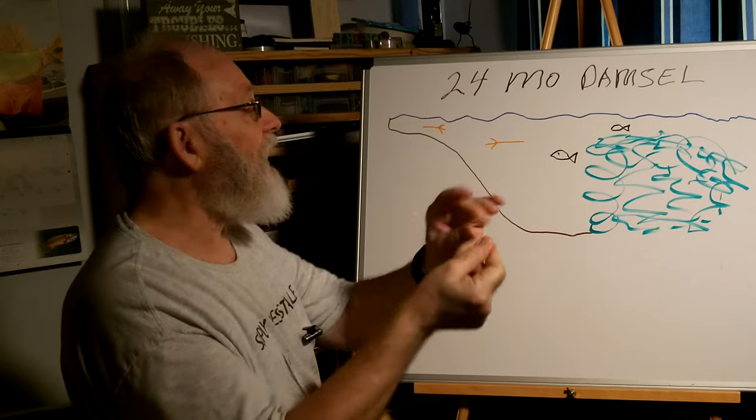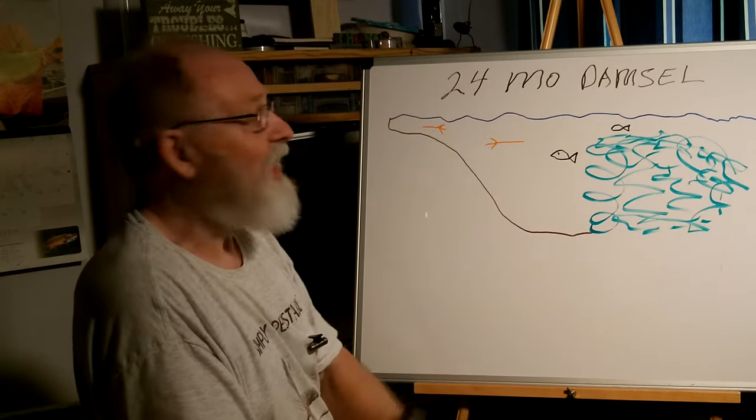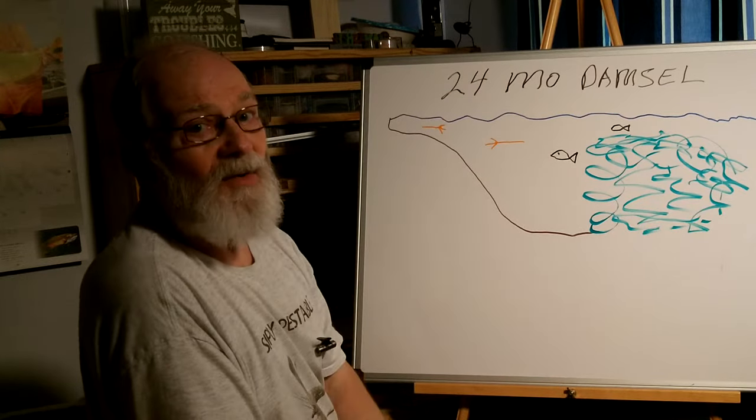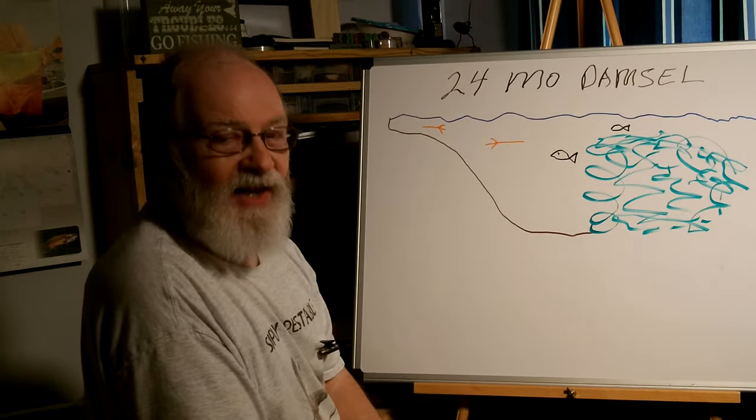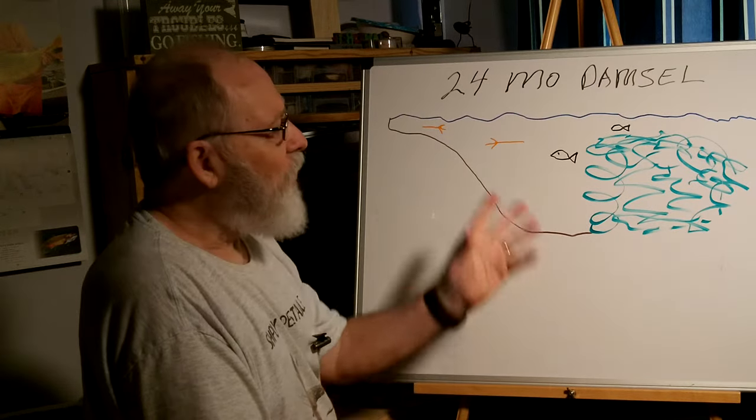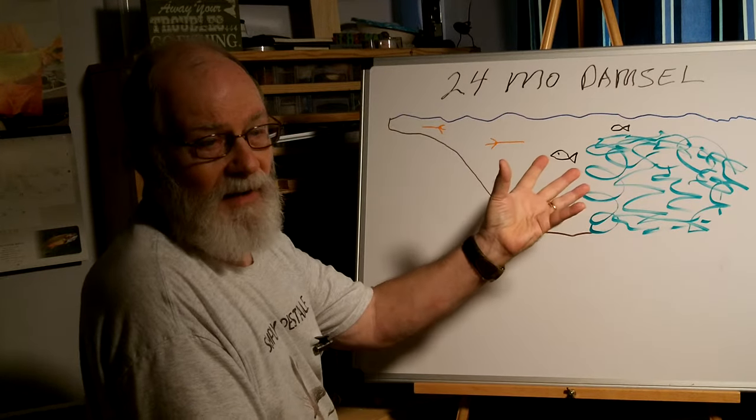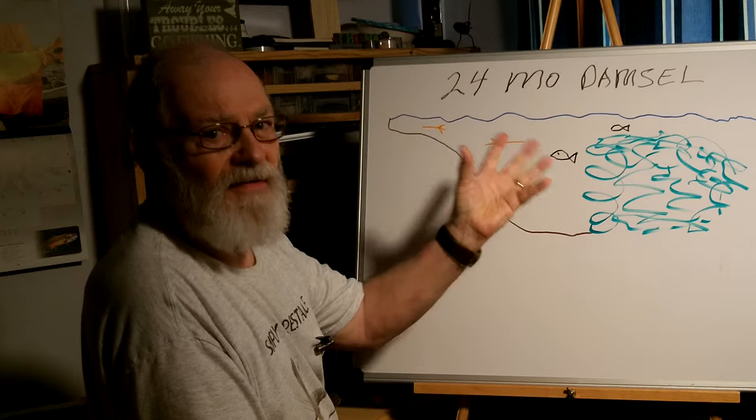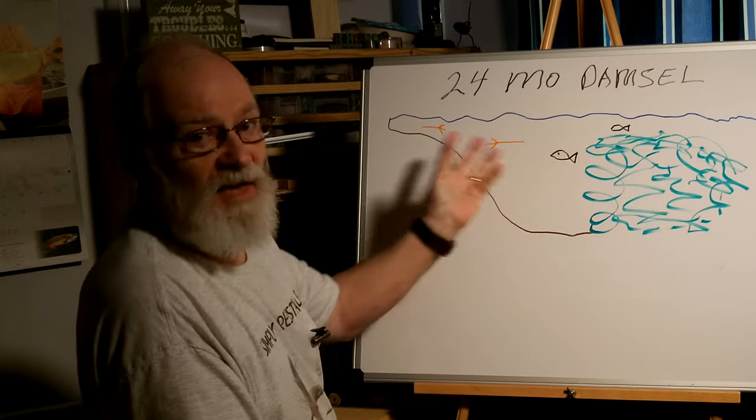So I put on the second fly and continued to fish because the sun hadn't hit this area really hard yet. And on the second fly, I caught 18 fish. So within a half an hour's time, I caught 35 fish using this technique.